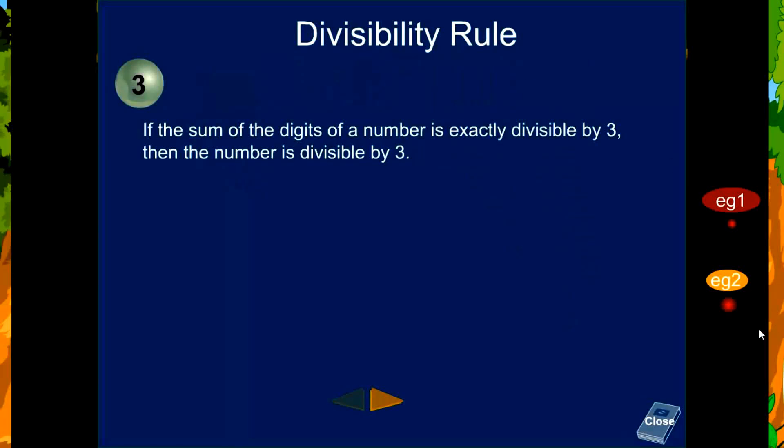If the sum of the digits of a number is exactly divisible by 3, then the number is divisible by 3.